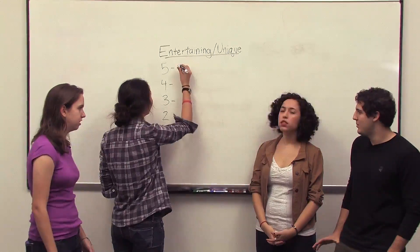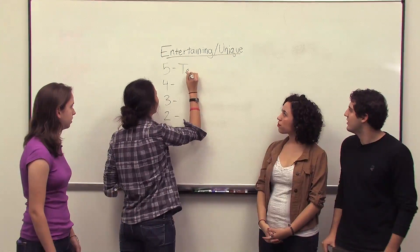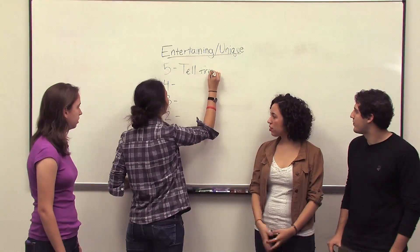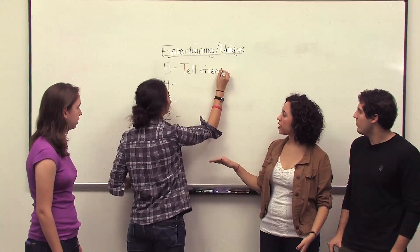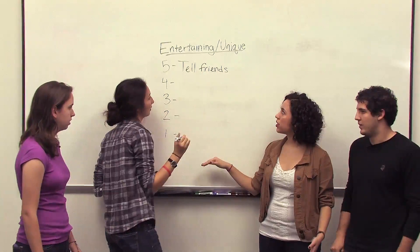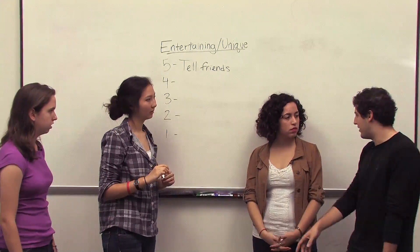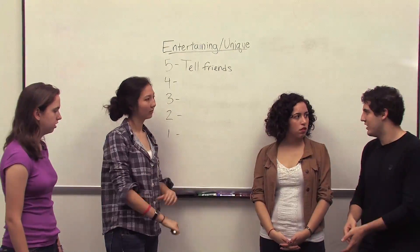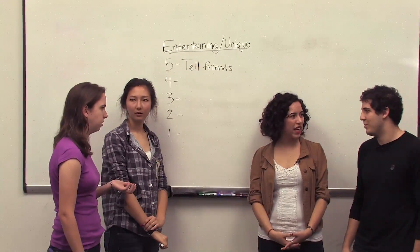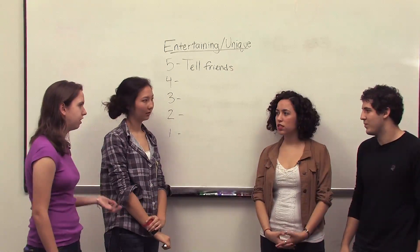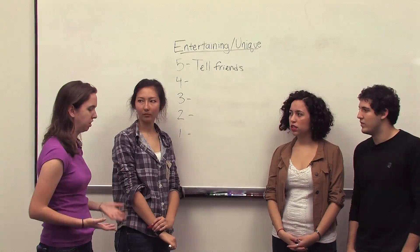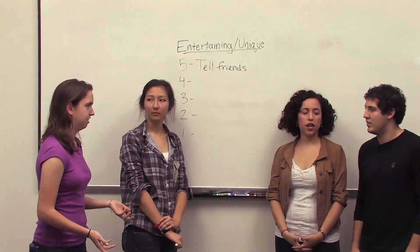So a 5 means 'tell your friends.' On the other side of the spectrum, what would our worst emotion be — the opposite of entertaining and unique? Boring. But you could even be more than just bored — you could actively dislike it.